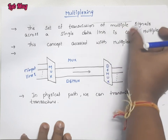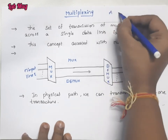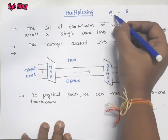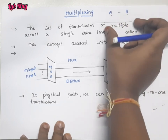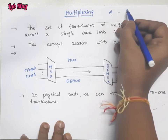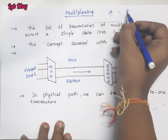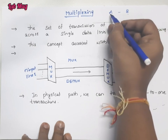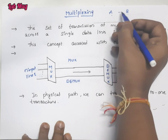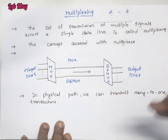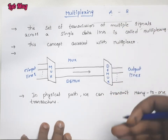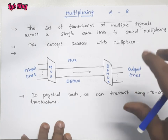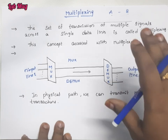In a normal scenario, suppose person A and person B are communicating — data transmitted from A to B uses a single direct media link. But in such situations, the cost of purchasing a dedicated medium for every single connection becomes very high.